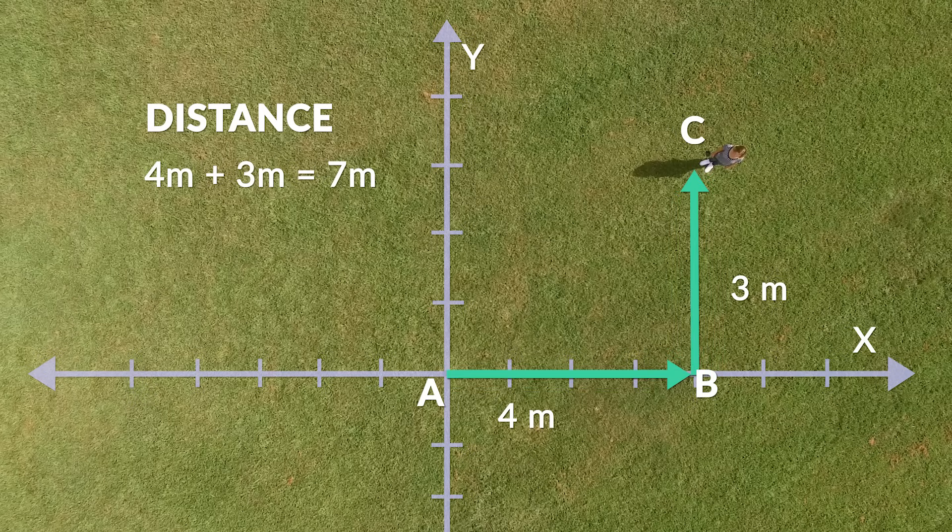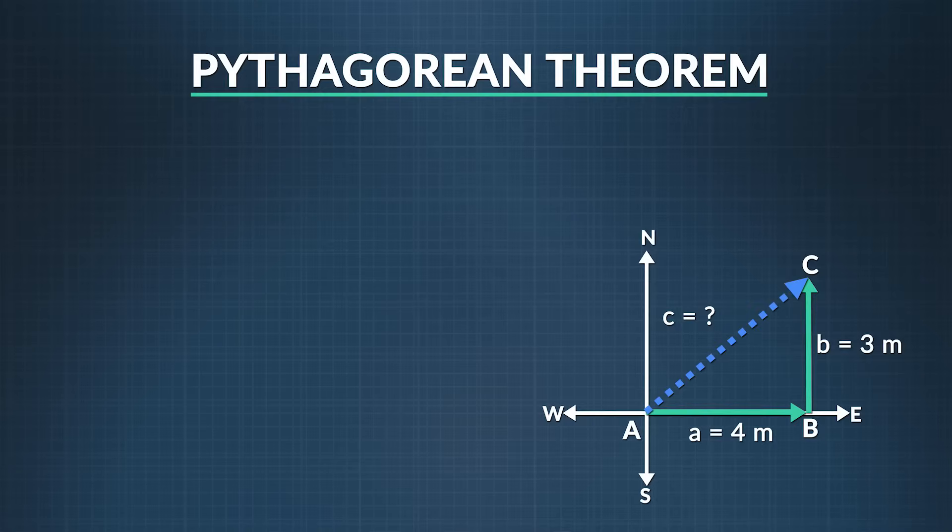But with displacement, we only need to know the origin and destination and the shortest route between the two points. In my case, my displacement is how far point C is from point A if we drew a straight line between them. Knowing that, we can figure out the displacement. This looks like a job for the Pythagorean Theorem.